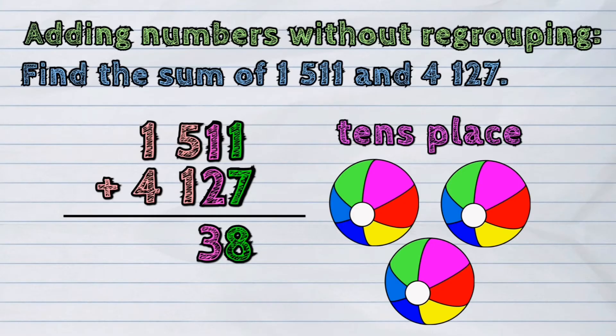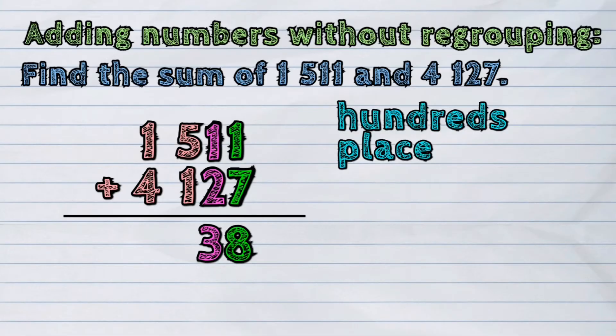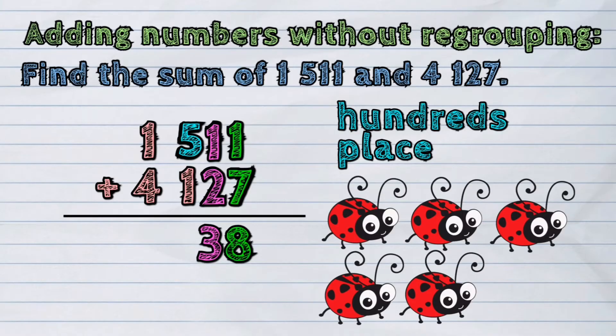Now, let's proceed to the digits in the 100's place. Adding 5 and 1 gives the sum of 6.